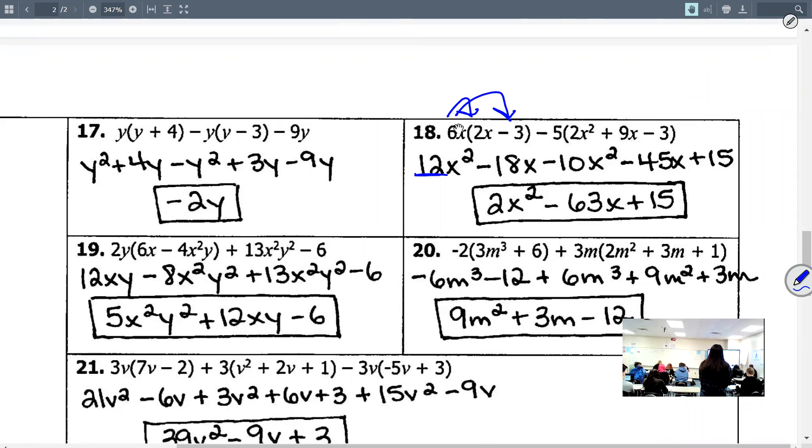Six times two gives me a positive 12. x times x gives me x squared. And then on to the next term. Six times negative three is negative 18. And then there's no other variable there, so just copy it over x. And then you have to distribute this negative five to all three terms inside those parentheses. So negative five times two is negative 10 x squared. Negative five times a positive nine is a negative 45. So remember that it's a negative five that you're multiplying. That's the big mistake that students make. And then the x of course, and then negative five times negative three is a positive 15.